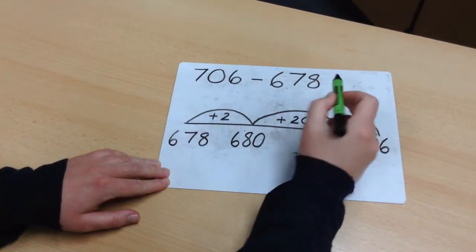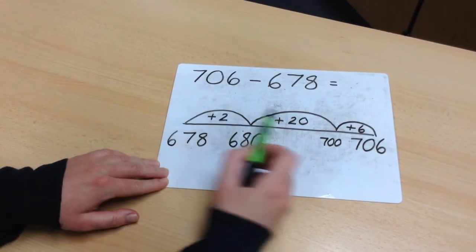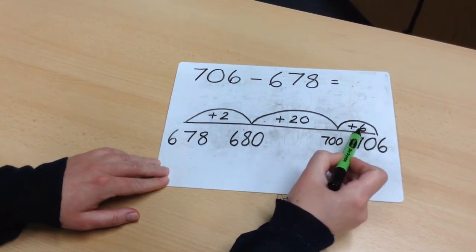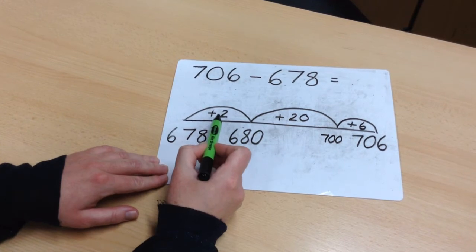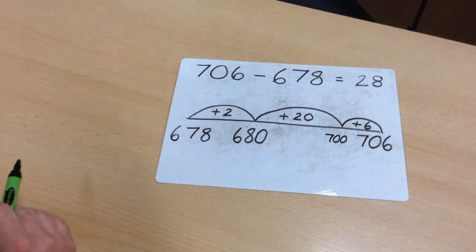To work out my overall difference, I need to add the numbers that I counted on. 20, add 6 is 26, add 2 is 28. So my overall difference is 28.